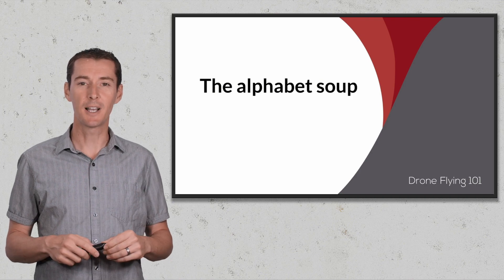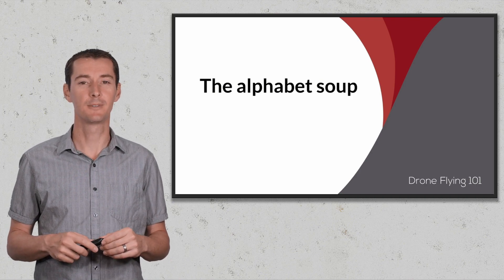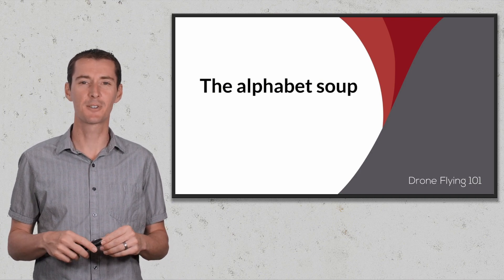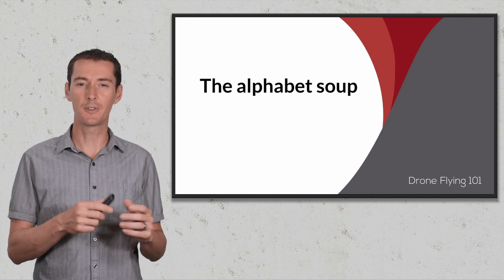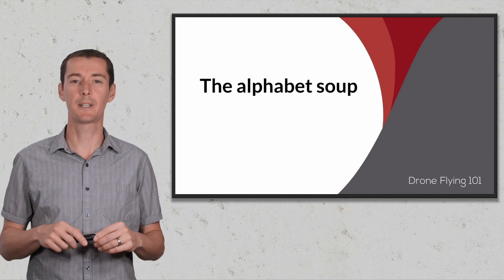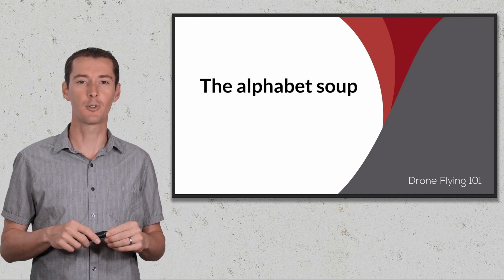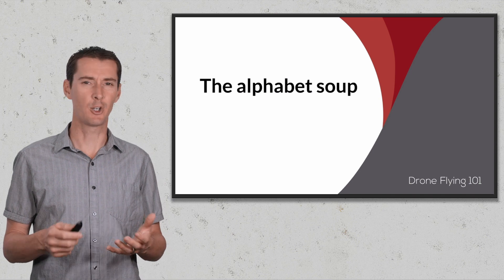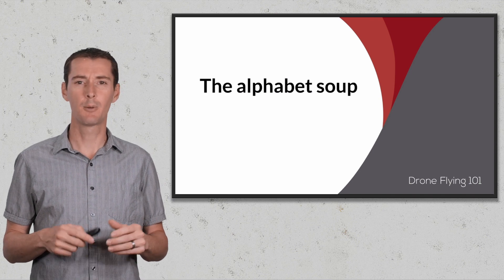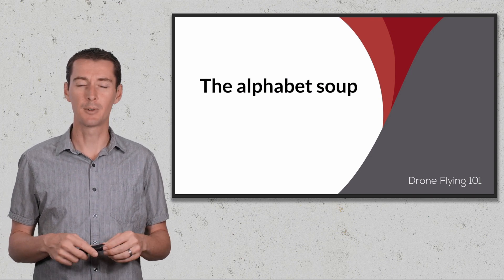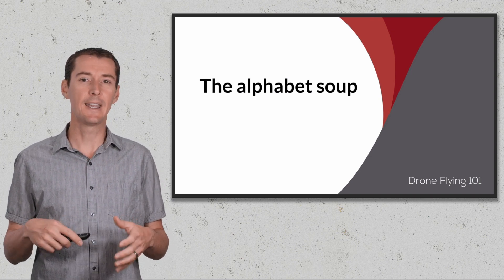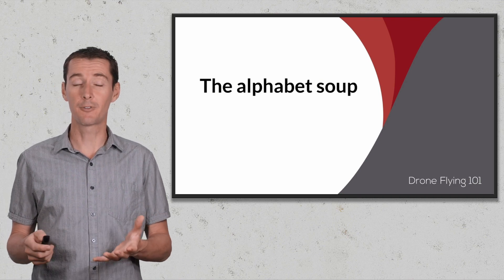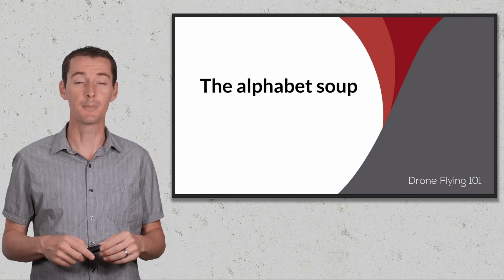Today I want to talk about the alphabet soup. You may wonder what the heck is the alphabet soup. Well, you've heard a lot of different terms by now if you've been flying for a while — even if you're starting, you may hear people say Part 107, Part 101, Section 336, AMA. What does this all mean and what is the difference between all of them?